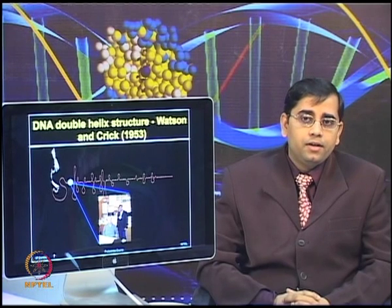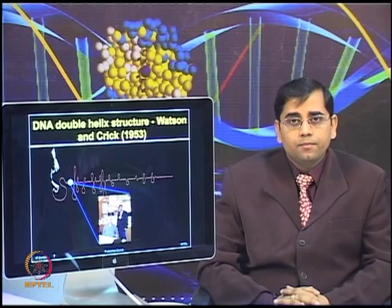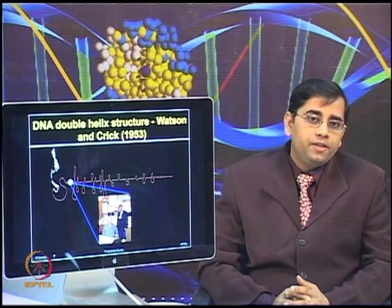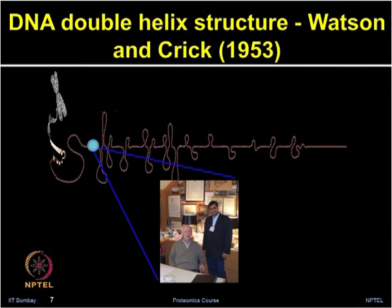Watson and Crick published a paper in 1953 in Nature and described: 'We wish to suggest a structure for the salt of deoxyribonucleic acid DNA. This structure has novel features which are of considerable biological interest.' From that time, the structure and function of DNA has been a subject of great research interest in the field of biology. Shown in the picture is James Watson — I had the opportunity to meet with him in Cold Spring Harbor, and I have shown that picture here.